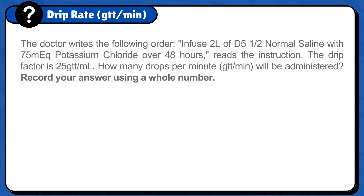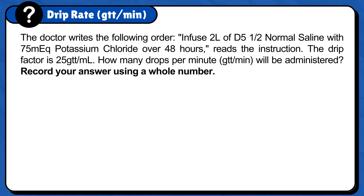The doctor writes the following order: infuse 2 liters of D5 half normal saline with 75 milliequivalents potassium chloride over 48 hours. The drip factor is 25 gtt per milliliter. How many drops per minute will be administered? Record your answer using a whole number.